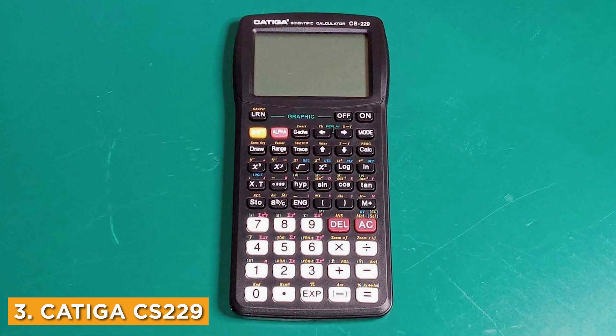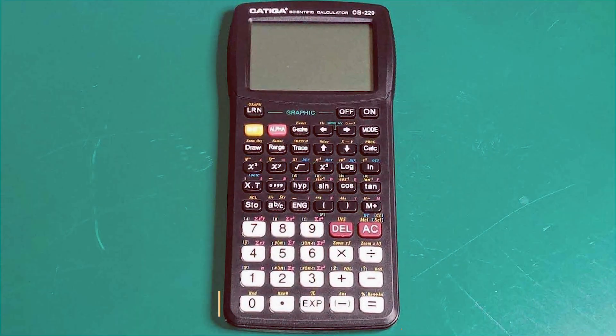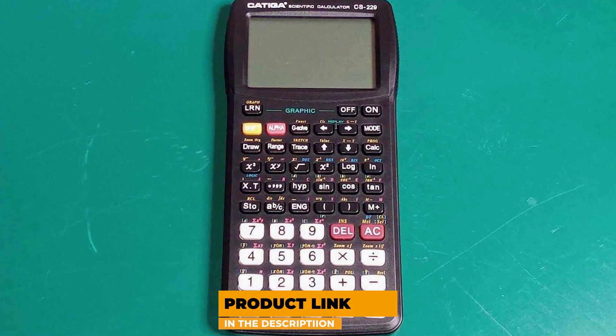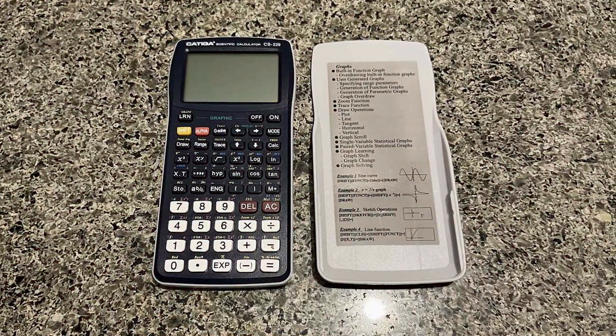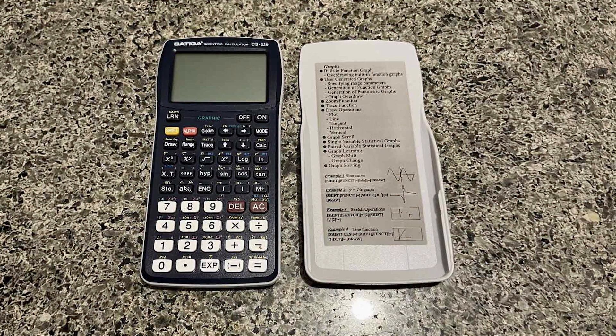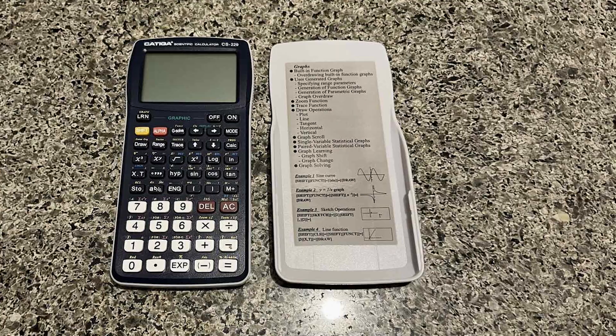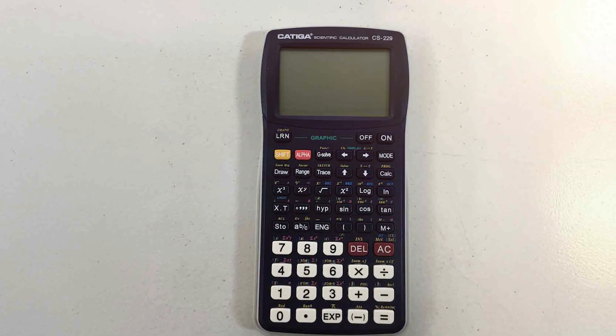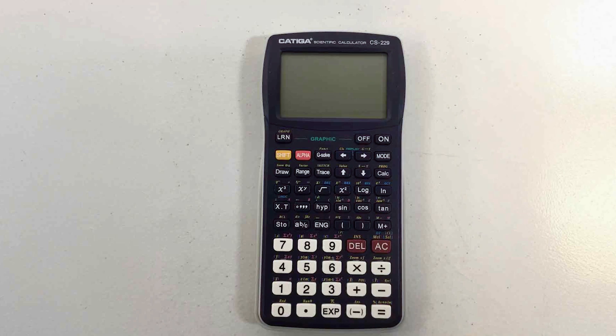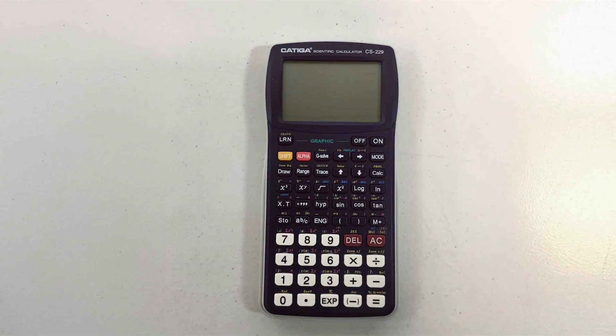Number 3: CATIGA CS-229 Scientific Calculator, known for its innovative graphics functions. This calculator features a modern design with a vibrant LCD display that allows for clear visualization of mathematical expressions and graphics. The user interface is straightforward, enabling students and professionals to access various functions quickly. The ergonomic keypad design ensures comfortable and efficient typing, reducing fatigue during long study sessions.